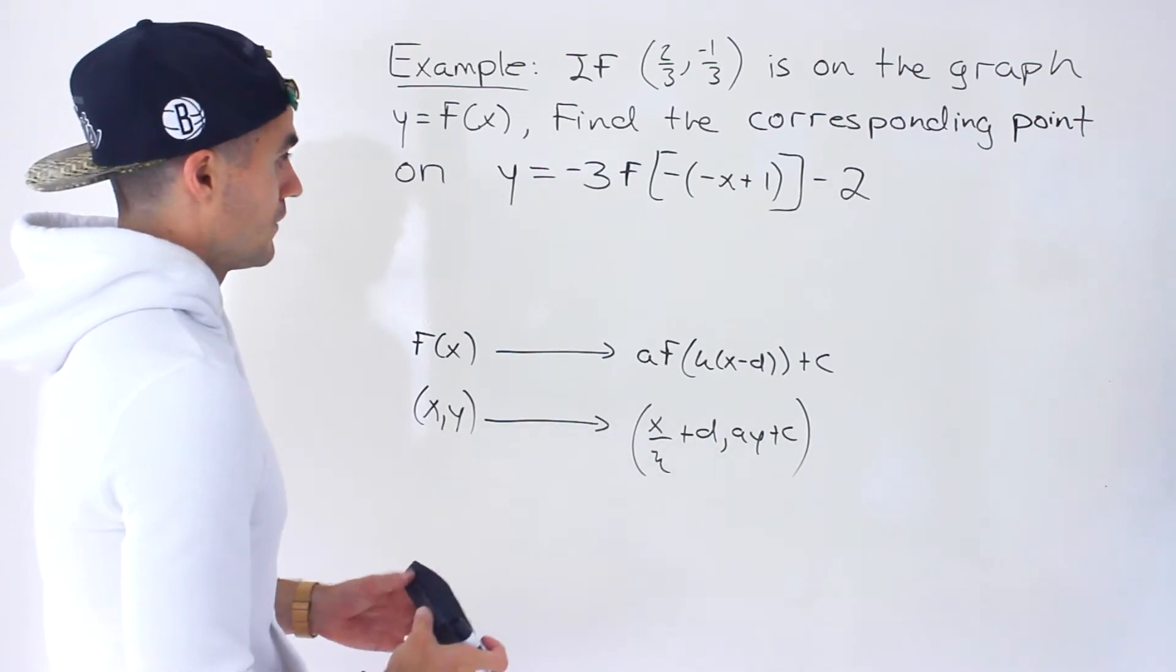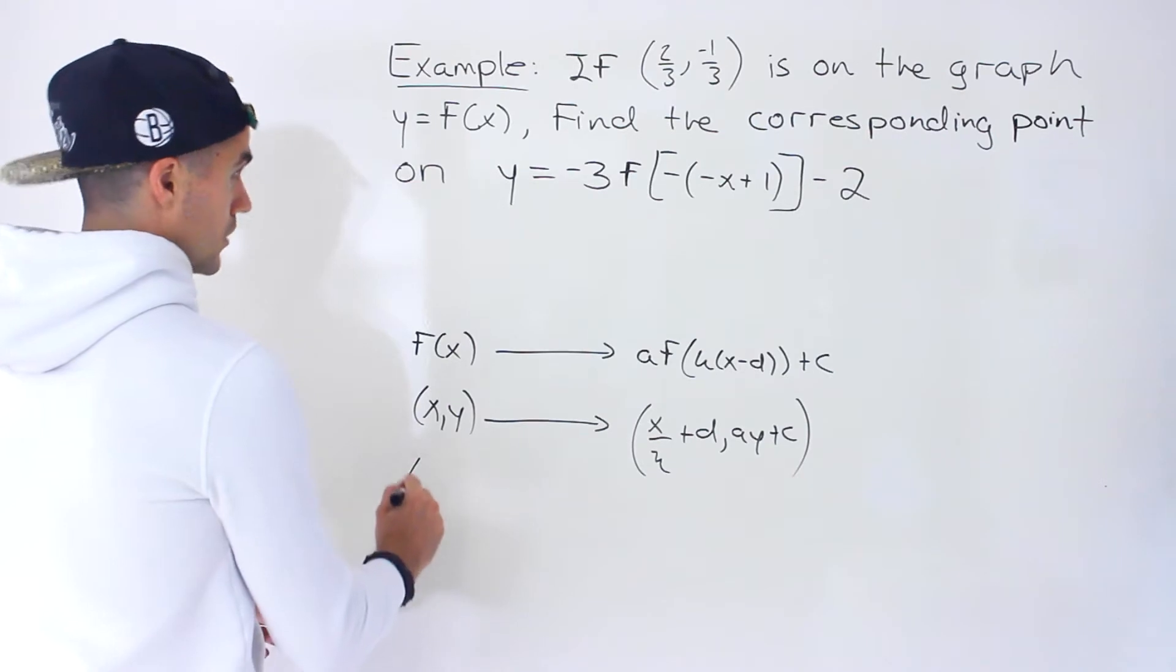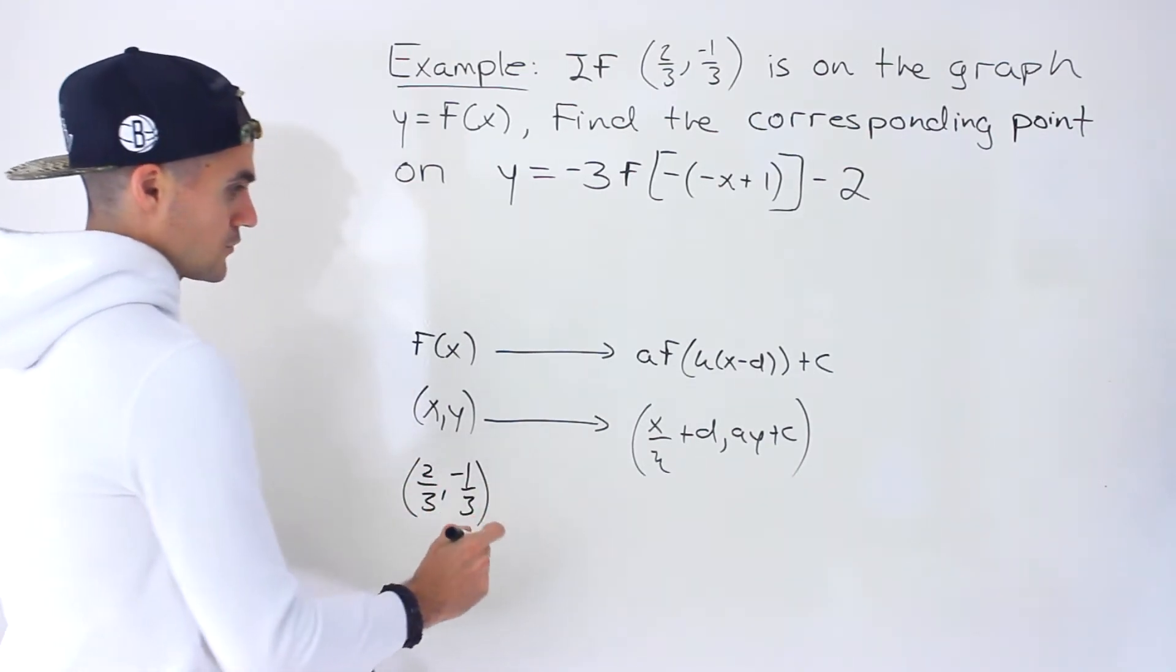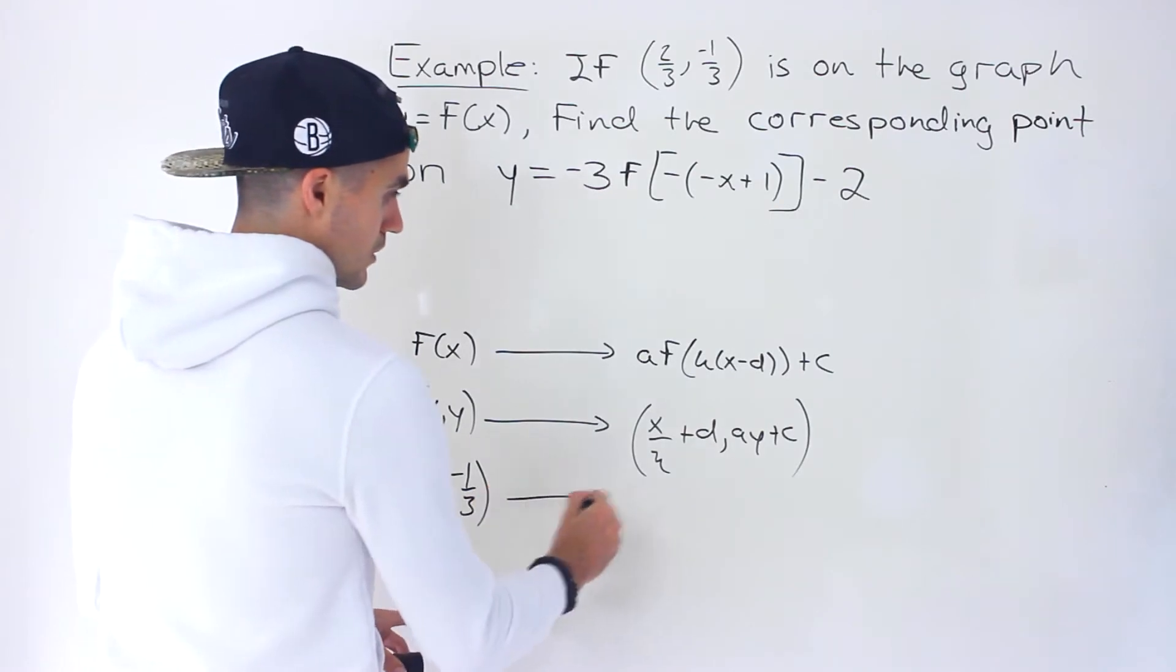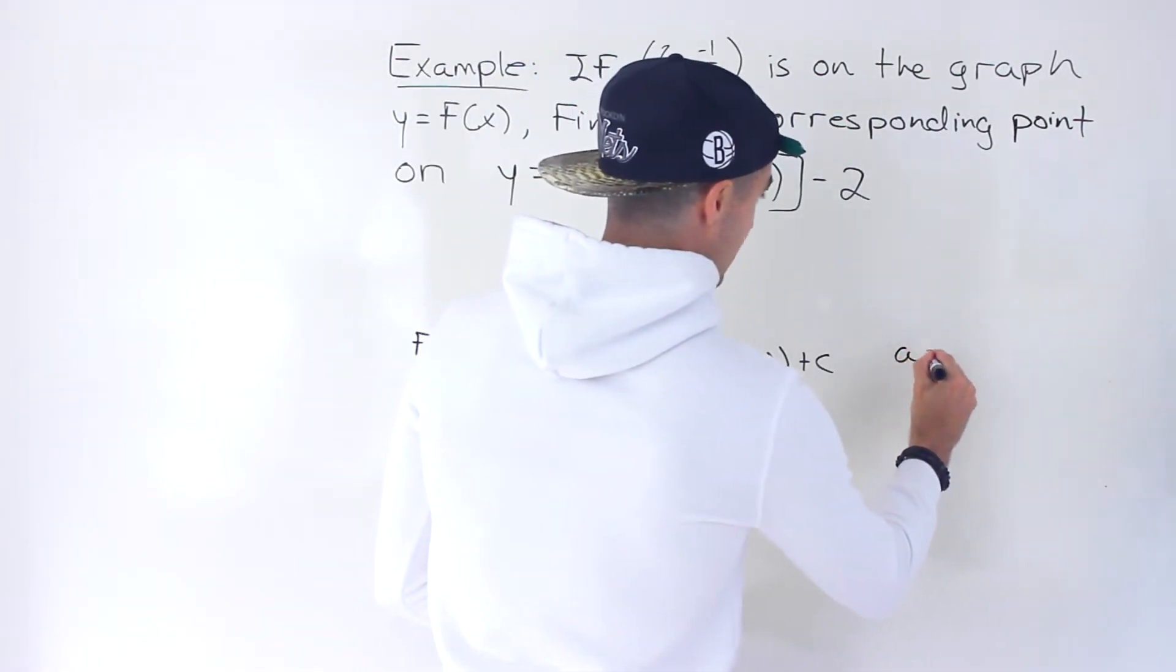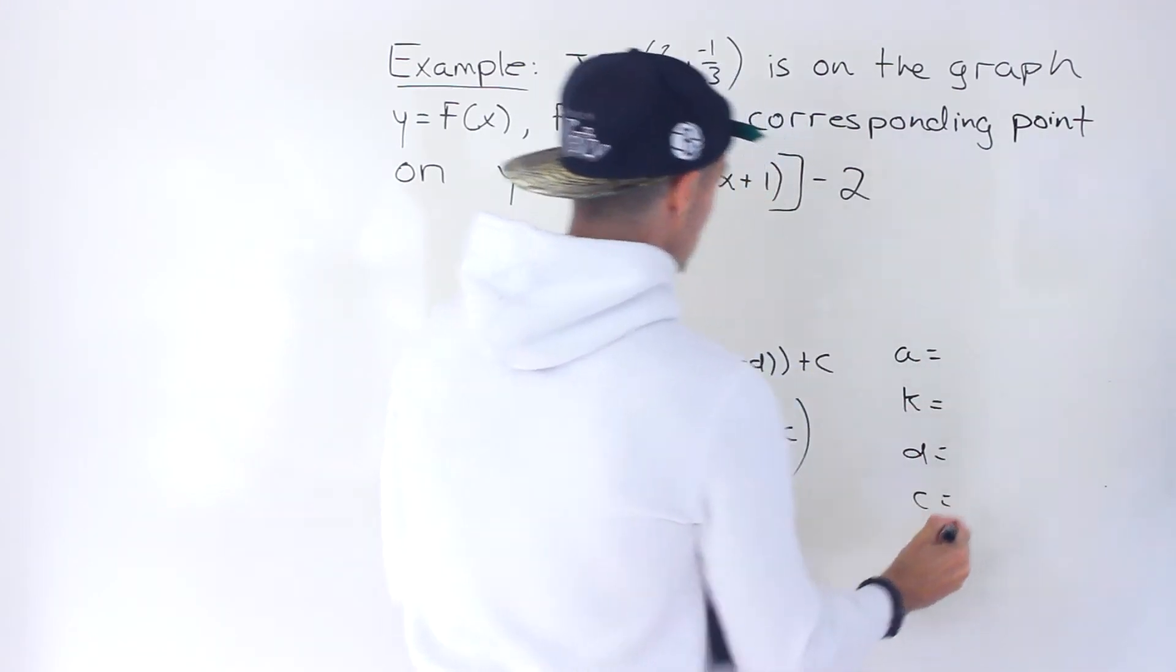So that's what we have to do here. We have this coordinate here, 2 over 3, negative 1 over 3, and we have to run it through this transformation formula. So what we have to get is the a, k, d, and c values from here.